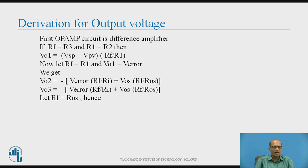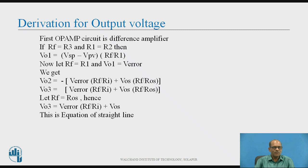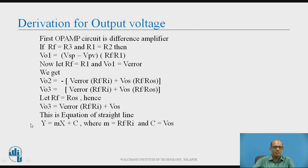phi_O3 equals phi_error times RF over RI plus phi_OS times RF over ROS. Now, let RF equal ROS. Hence, phi_O3 equals phi_error times RF over RI plus phi_OS. This is the equation of a straight line Y equals Mx plus C, where the slope M is given by RF over RI, and C is the intercept on the Y axis, that is phi_OS. In this straight line, Y is the output voltage of the proportional controller and X is phi_error, the error voltage.